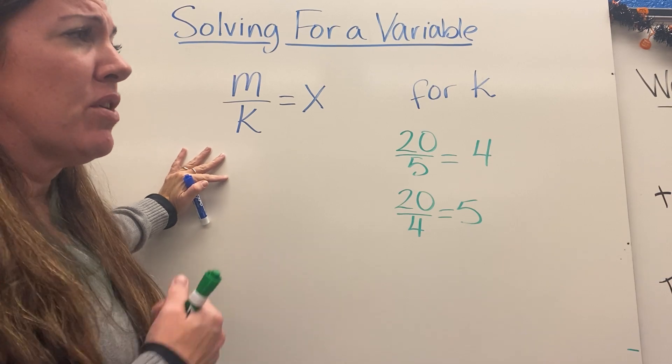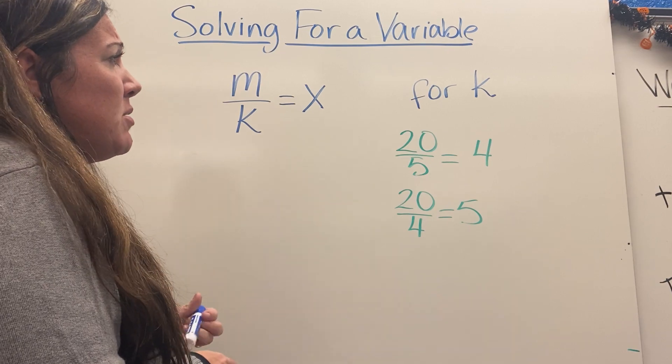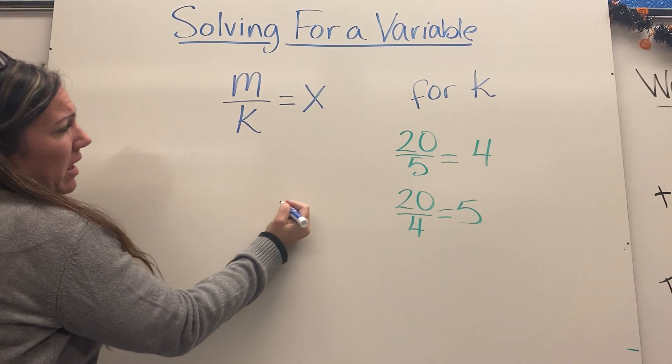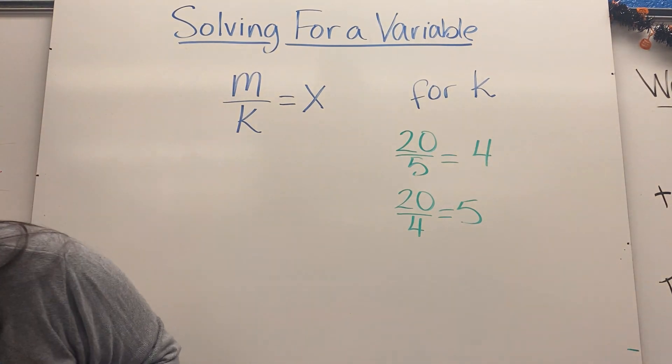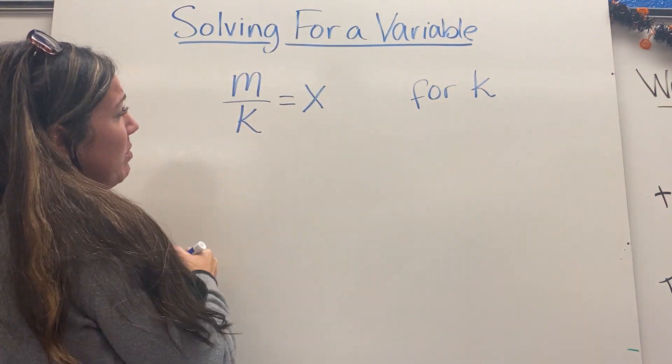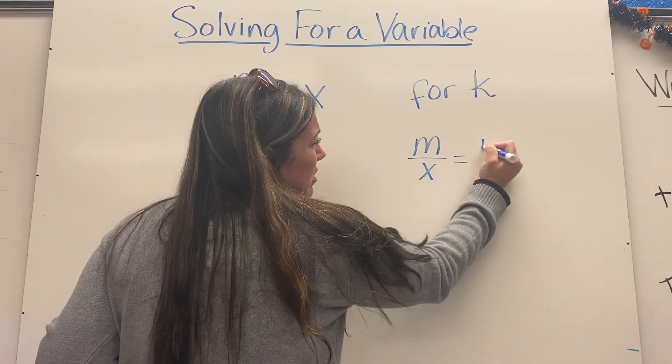If you're comfortable with that same principle being applied to just variables, then it's pretty straightforward to write that m over x equals k.